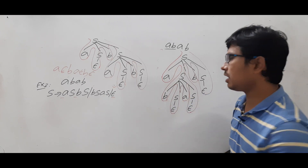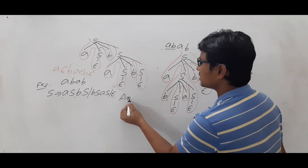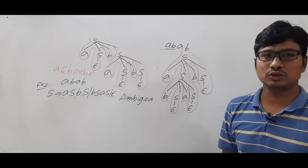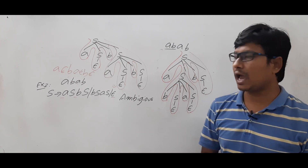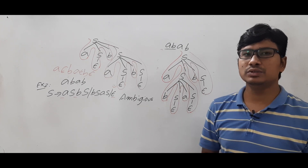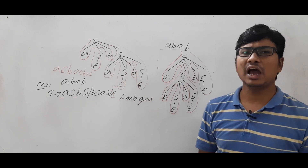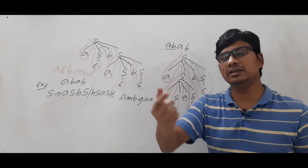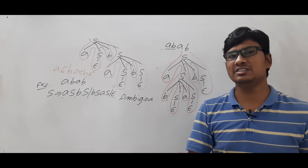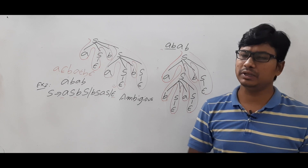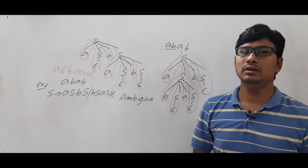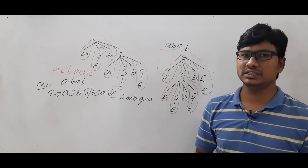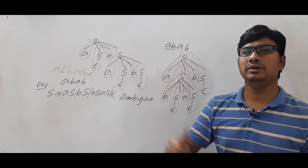So this grammar is ambiguous. I hope you have understood what an ambiguous grammar is and how to check it using these two examples. If you still have doubts or have a grammar you're unsure about, write it in the comment section and I will try to clear your doubts in less than 24 hours. Thank you for watching, have a nice day.